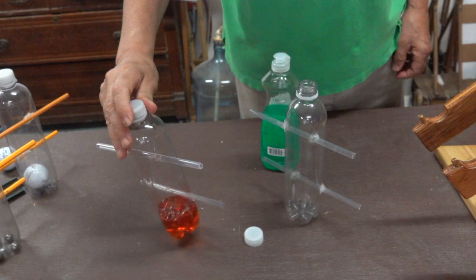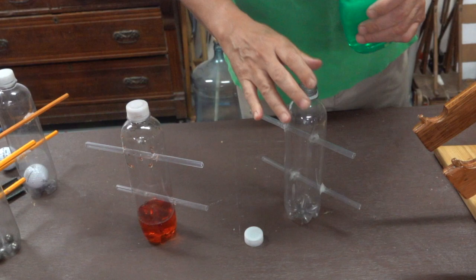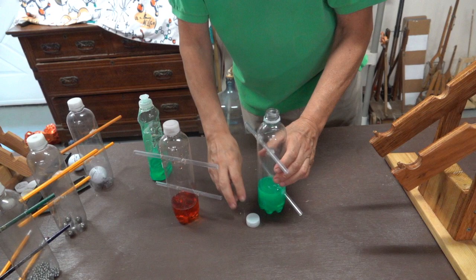Previously we saw how quickly the tumbler moved with water inside, now let's try something a little bit slower. Here's some dish soap. Let's see how this works.